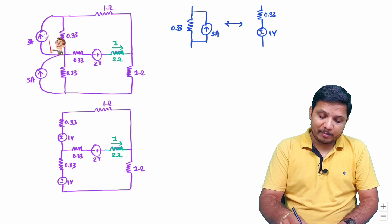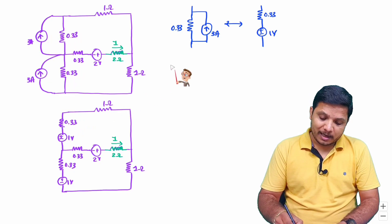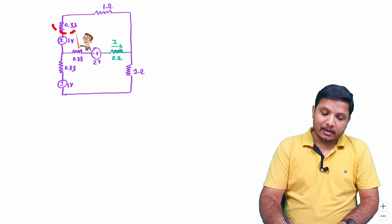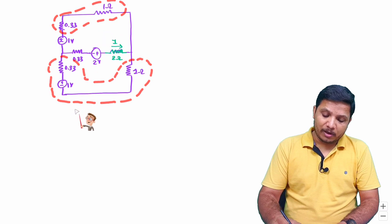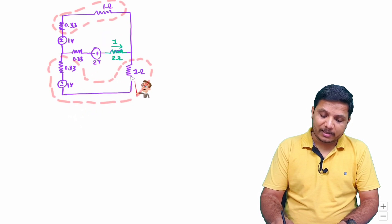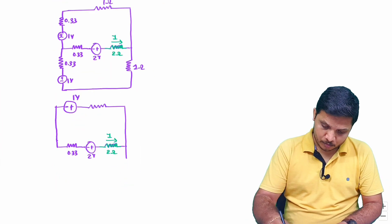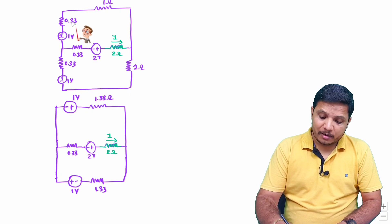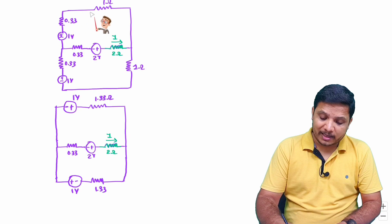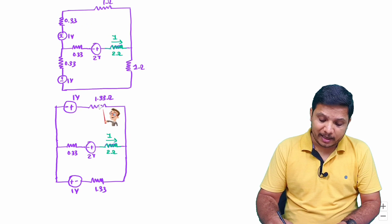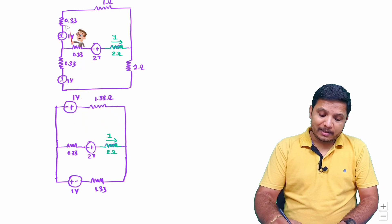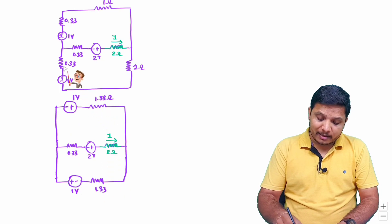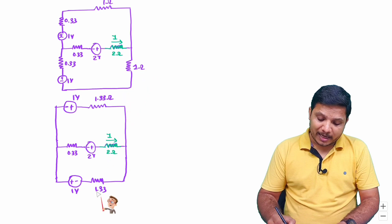I have replaced those combinations with voltage sources as explained. For further simplification, each 0.33-ohm resistor is in series with a 1-ohm resistor. The algebraic sum is 1 plus 0.33, giving 1.33 ohm. Both branches become 1.33 ohm resistors in series with 1-volt sources, with opposite polarity directions.